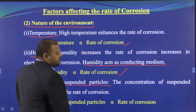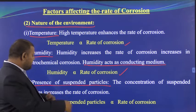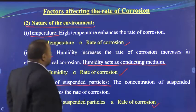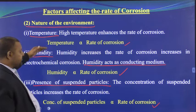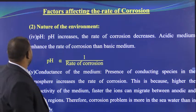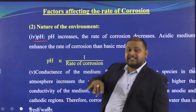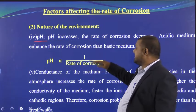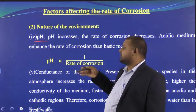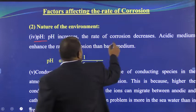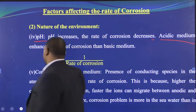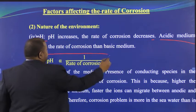Third, the presence of suspended particles: if there are more suspended particles, the rate of corrosion also increases. Fourth, pH: if pH is more (basic medium), corrosion is less; in acidic medium, corrosion is more. pH is inversely proportional to corrosion, and acidic medium enhances the rate of corrosion.